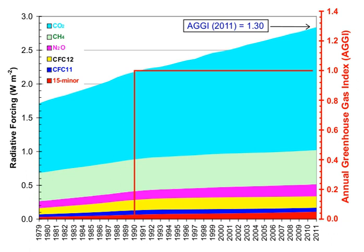Future warming is projected to have a range of impacts, including sea level rise, increased frequencies and severities of some extreme weather events, loss of biodiversity, and regional changes in agricultural productivity. The main sources of greenhouse gases due to human activity are burning of fossil fuels and deforestation, leading to higher carbon dioxide concentrations in the air. Land use change, mainly deforestation in the tropics, accounts for up to one-third of total anthropogenic CO2 emissions.